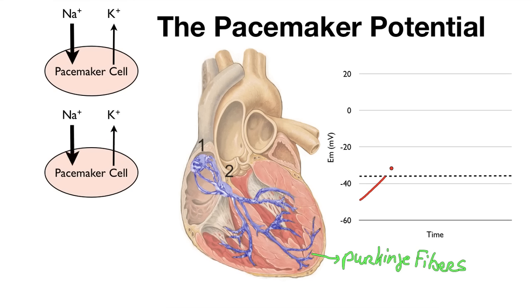We have the sodium rushing in and some potassium leaving. But now that we've reached the threshold, voltage-gated calcium channels open and calcium is going to rush into the cell. So we're going to get this rapid depolarization — in other words, we're going to get an action potential.